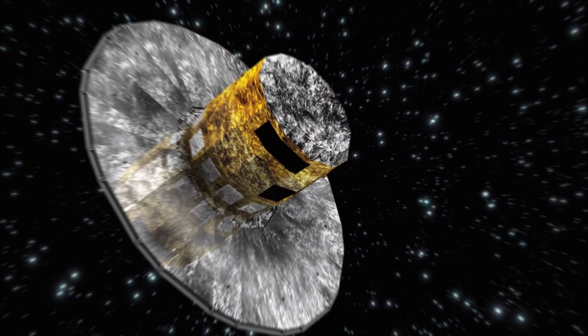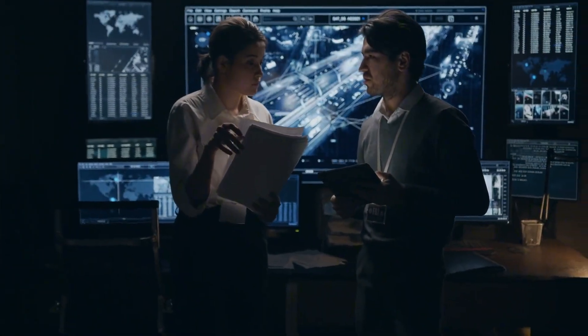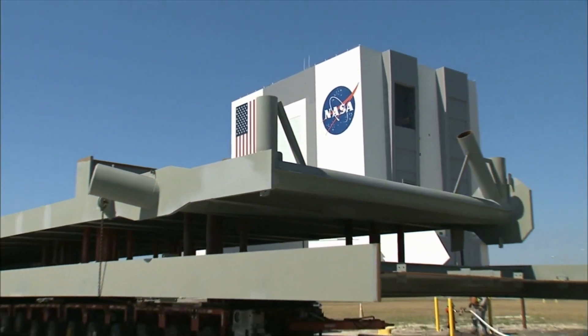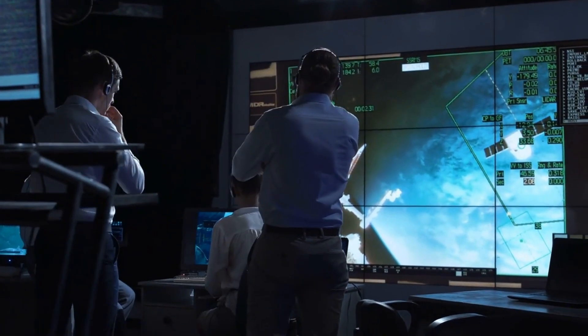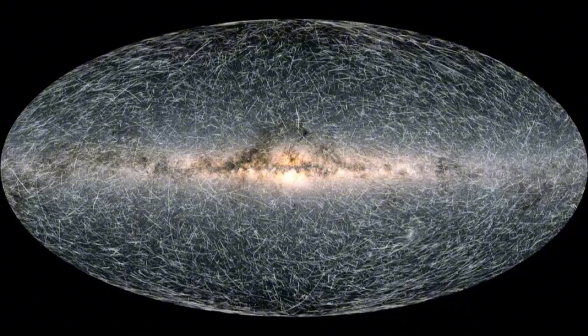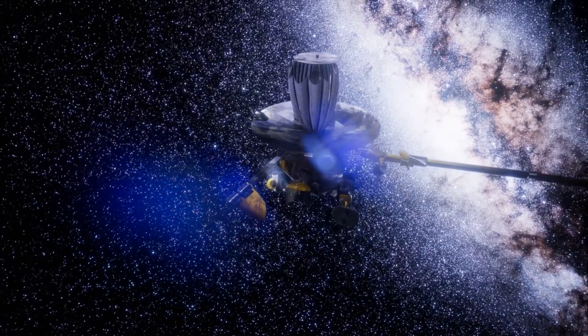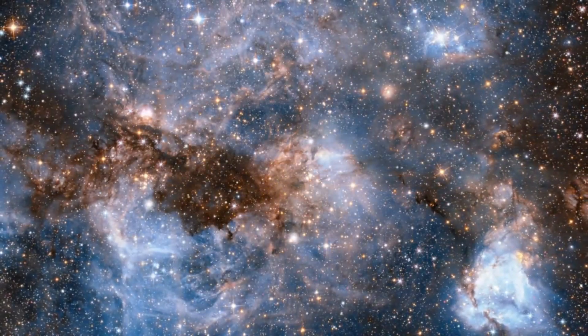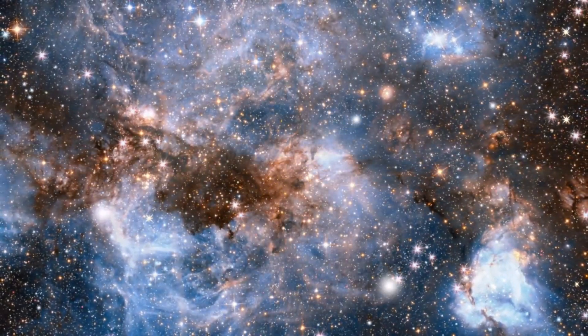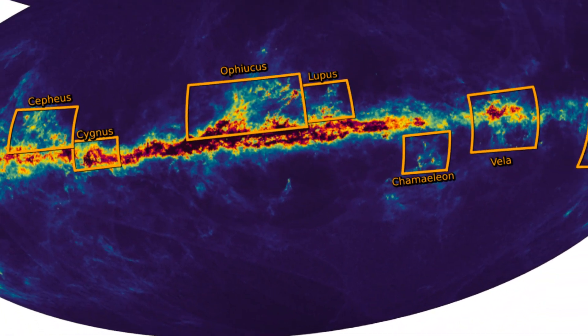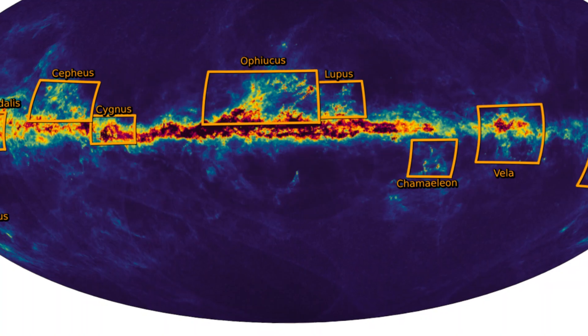Launched in 2013, Gaia, a mission led by the European Space Agency with significant input from NASA and other global partners, aims to create a precise 3D map of our galaxy. It achieves this by meticulously measuring the positions, distances and motions of over a billion stars with unparalleled accuracy.